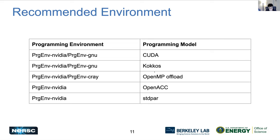For OpenMP offload, if you're looking for portability across different types of GPUs, this is one of the most recommended programming models — it will work on NVIDIA, AMD, or even Intel GPUs. On Perlmutter, we support it using PrgEnv-nvidia, and there are also options in PrgEnv-cray. For OpenACC, on Perlmutter we highly recommend PrgEnv-nvidia because that has the best support. And then we have standard C++ parallel library support as well through the NVIDIA programming environment.